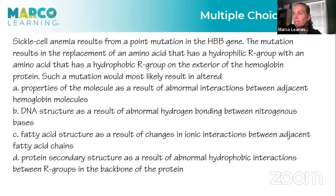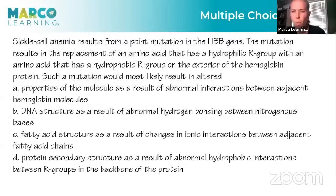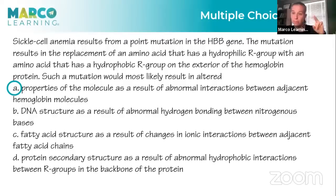Practice question: sickle cell anemia results from a point mutation in hemoglobin genes, replacing a hydrophilic R group with a hydrophobic R group on the exterior. Answer A — abnormal interactions between adjacent hemoglobin molecules — is correct because switching that amino acid changes the protein shape, so molecules no longer bind correctly. Option B (DNA hydrogen bonding) is unaffected. Option C (fatty acid chains) is irrelevant to proteins. Option D (secondary structure from R groups) is wrong because secondary structure involves alpha helices and beta-pleated sheets, not R group interactions.